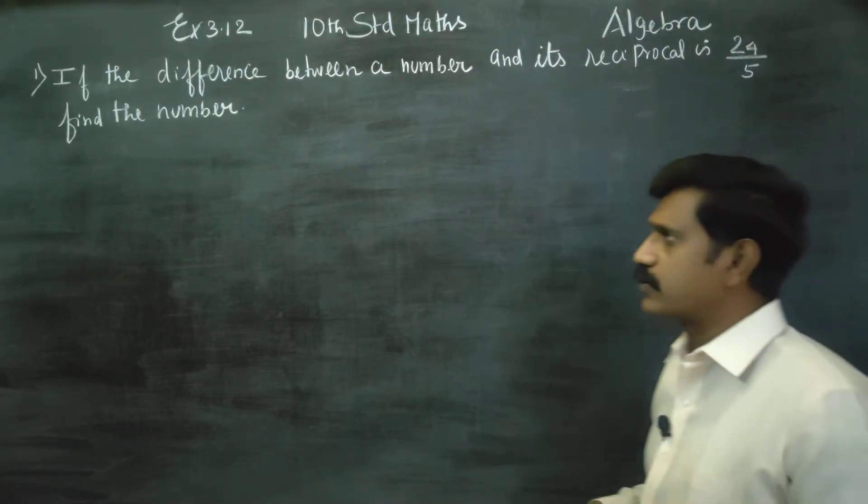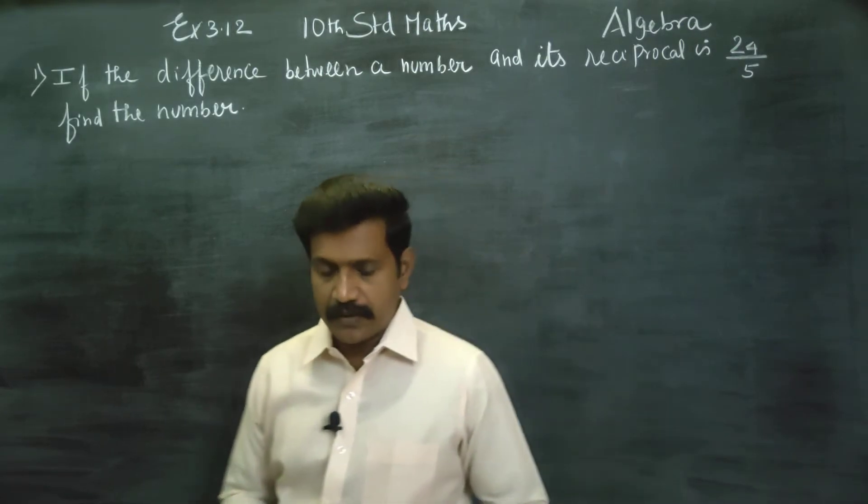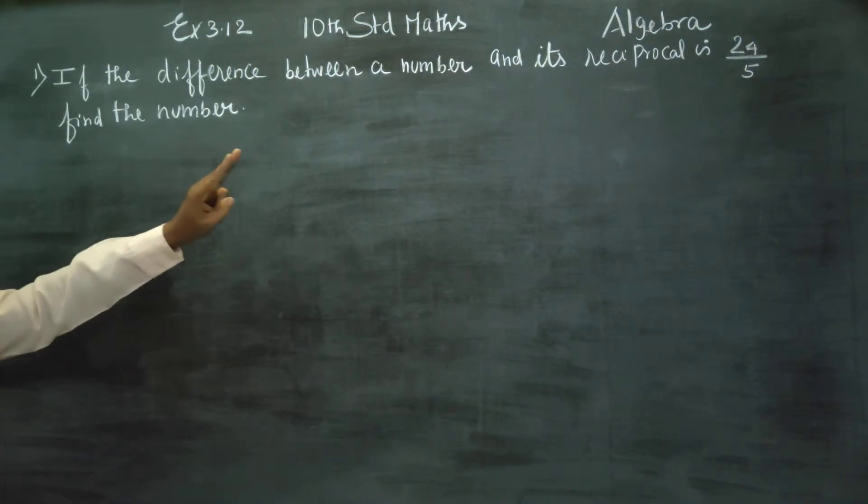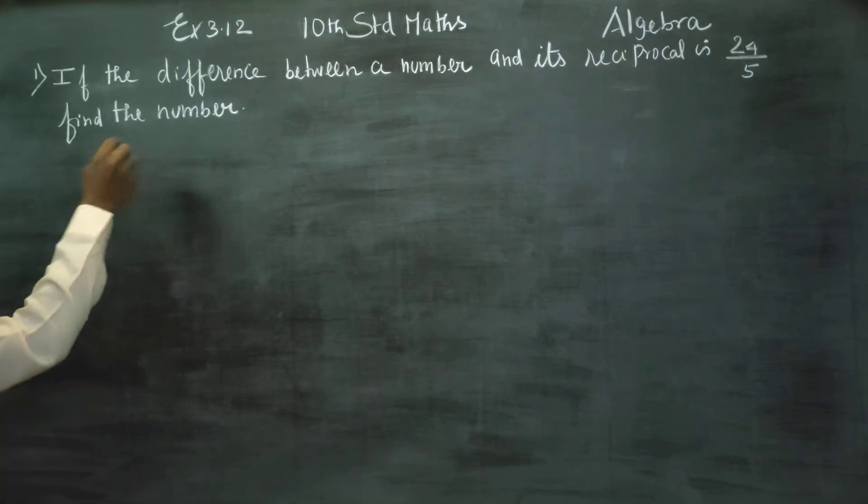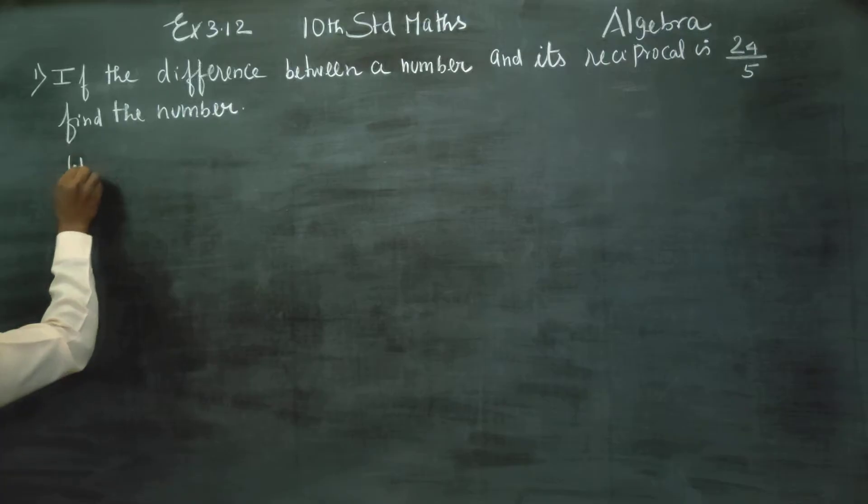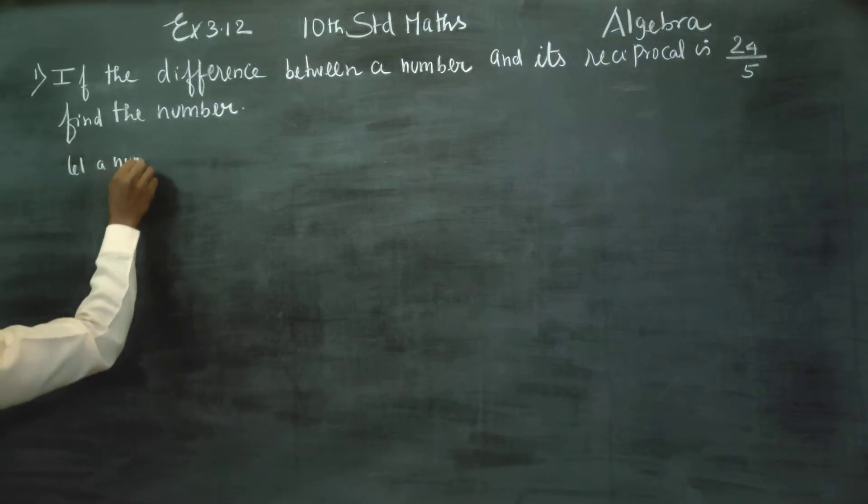Let's solve this problem. For the difference between a number and its reciprocal, let a number be x. Its reciprocal would be 1/x.